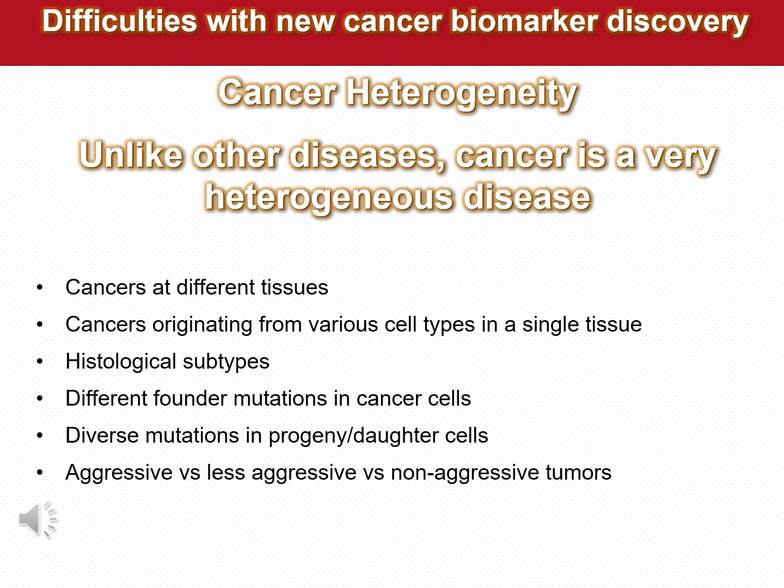I will now move on to describe some other aspects of cancer that you should be aware of. Over the last 10 years, with the advent of single-cell sequencing, it has become very evident that cancer is a very heterogeneous disease. In fact, we can say that the cancer of each individual patient is probably very unique, and cancers can arise at different tissues — at any tissue, in that respect.